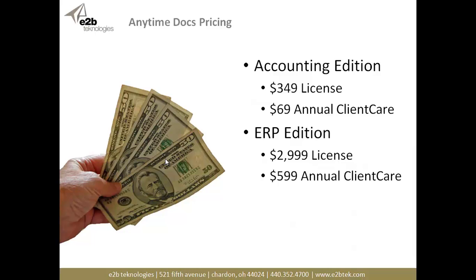Pricing: the Accounting Edition, which covers QuickBooks and Sage 50 (Peachtree), is really affordable — you're looking at $349 for the license and $69 annually for your client care, which is your unlimited maintenance and support contract. If you're using any of the ERP products on the market — the Sage ERP solutions, Microsoft Dynamics, Epicor, etc. — you're looking at $29.99 for a license and $5.99 for your annual client care.